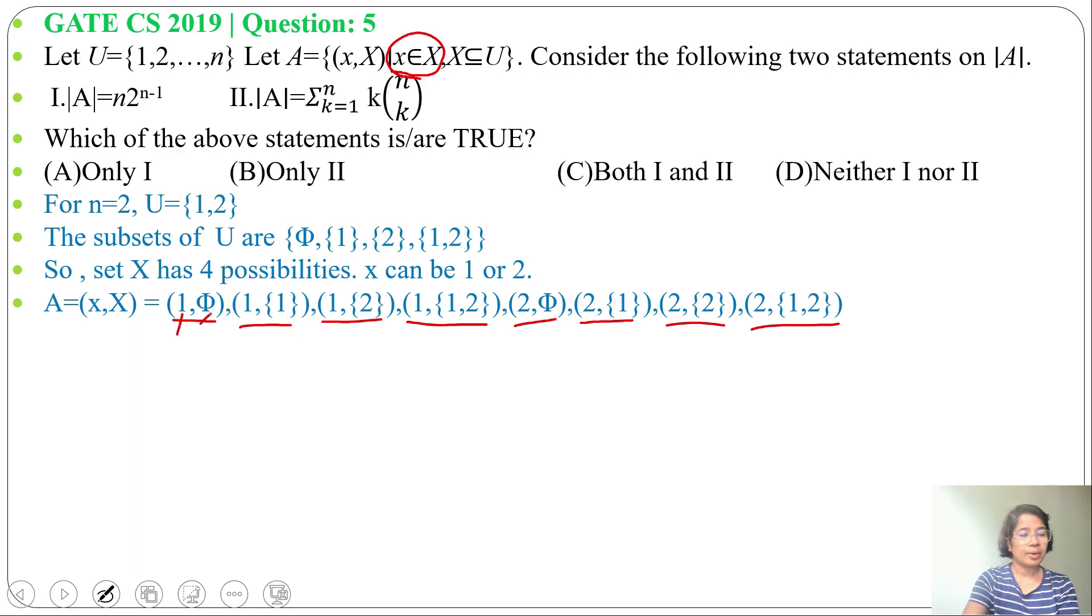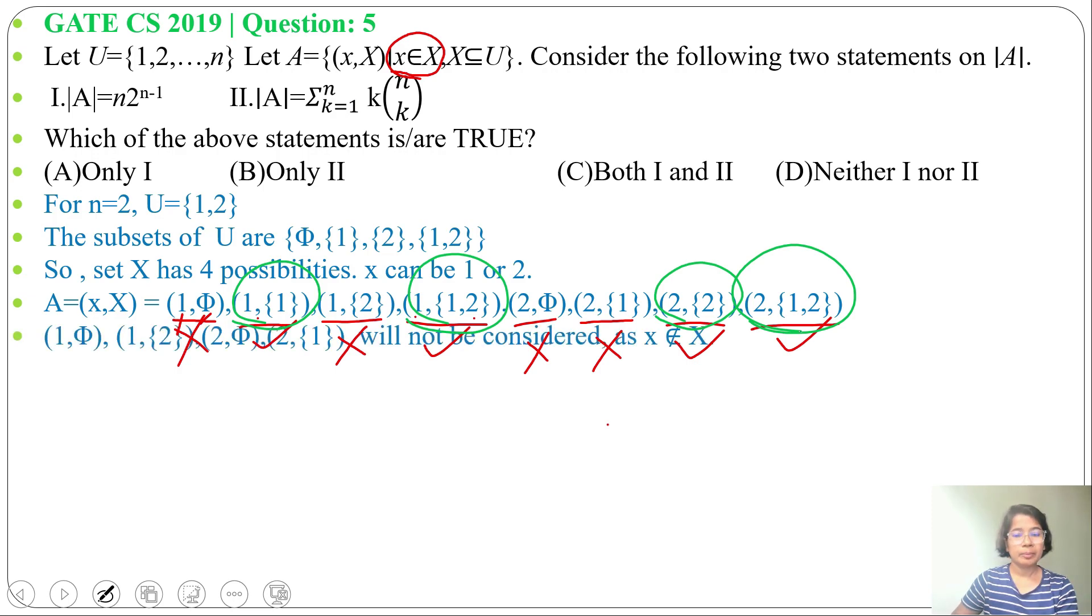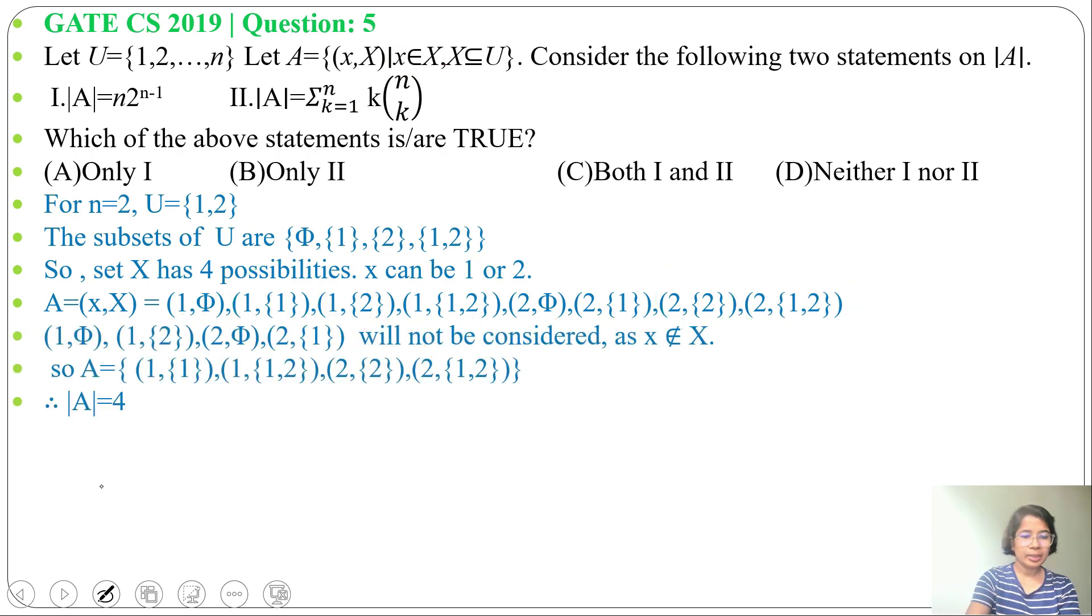Here, 1 doesn't belong to phi. This 1 belongs to {1}. This 1 doesn't belong to {2}. Then 1 belongs to {1,2}. 2 doesn't belong to phi. 2 doesn't belong to {1}. 2 belongs to {2}. 2 belongs to {1,2}. So set A will contain (1, {1}), (1, {1,2}), then (2, {2}), (2, {1,2}). So cardinality will be 4 and we will reject all this as x doesn't belong to X. So when n equals 2, A cardinality equals 4.